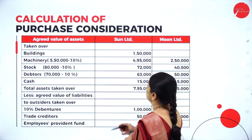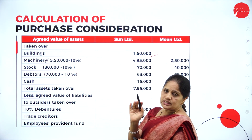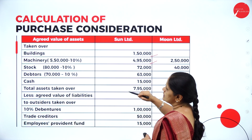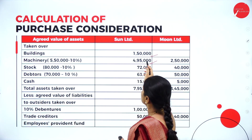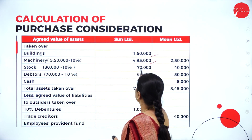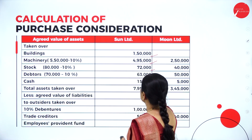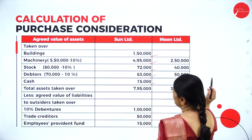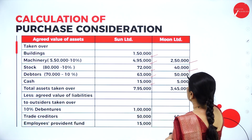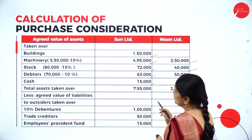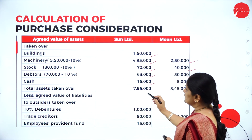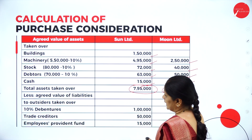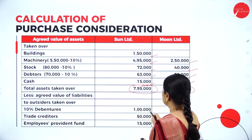Calculation of purchase consideration — agreed value of assets taken over. Buildings: 1,50,000 (no change). Machinery: 5,50,000 minus 10% = 4,95,000. Stock: 80,000 minus 10% = 72,000. Debtors: 70,000 minus 10% = 63,000. Cash: 15,000 (no change). Total for Sun Limited: 7,95,000. For Moon Limited: machinery 2,50,000, stock 40,000 minus 10%, debtors 45,000, cash 5,000 — total 3,45,000.